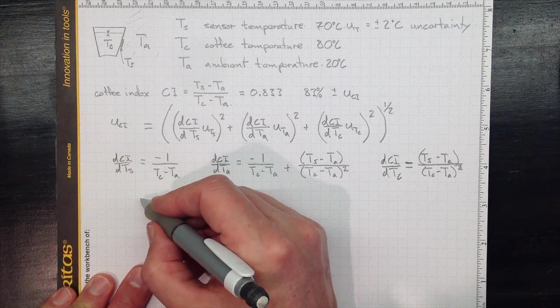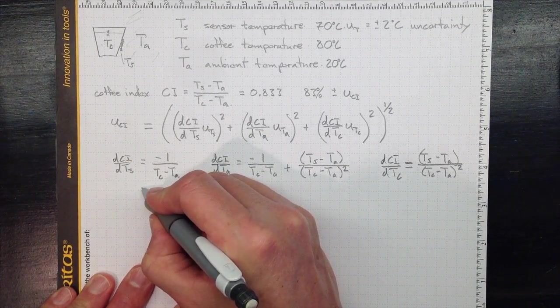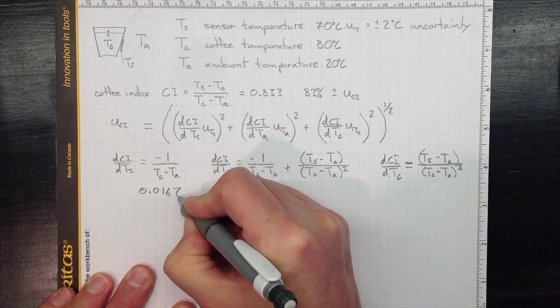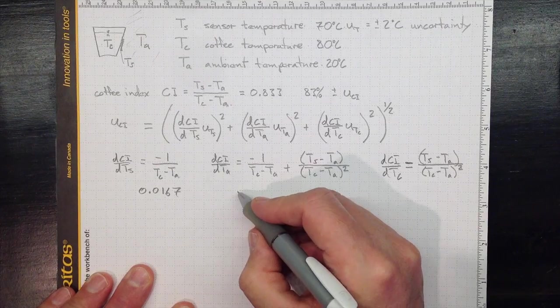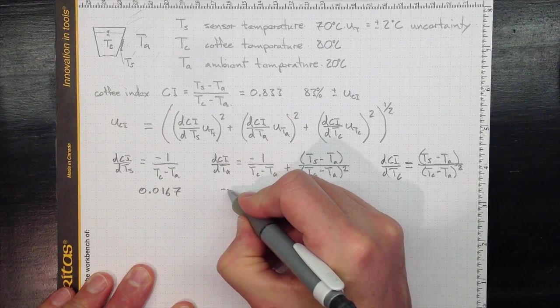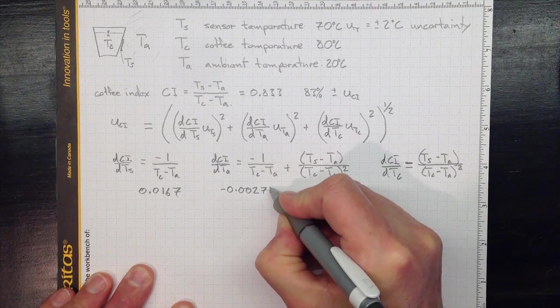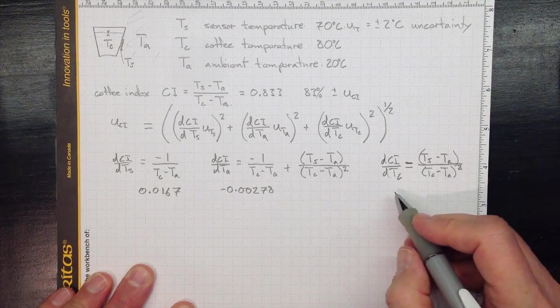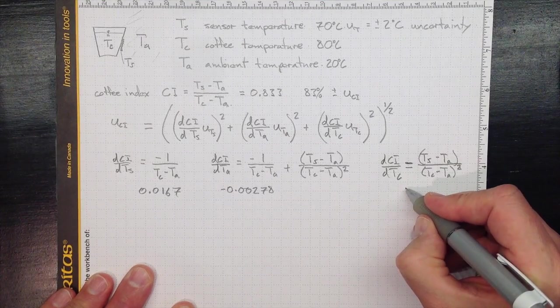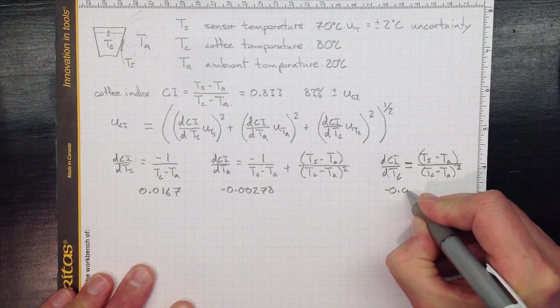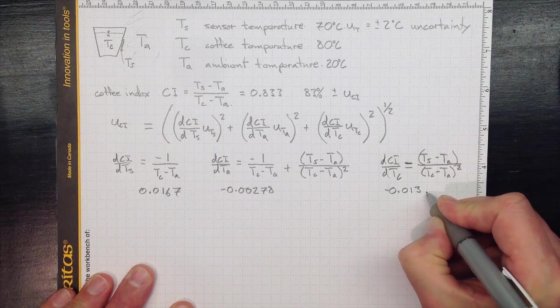what I would get for DCI, DTS is 0.0167. DCI, DTA, negative 0.00278. And DCI, DTC,